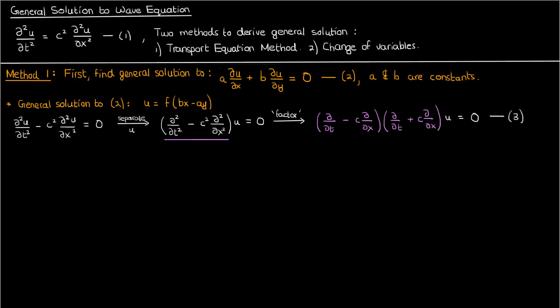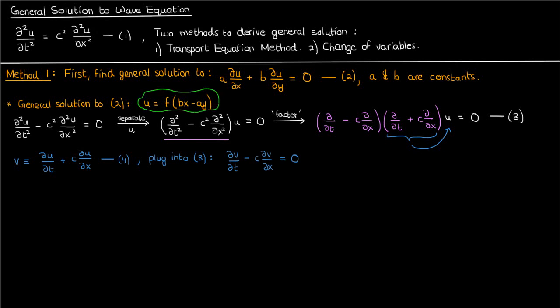You might not believe this factorization, but it actually works — you can expand out the expression to end up with the wave equation again. Now let's define a function v by expanding out the first operator factor on u: v equals the partial of u with respect to t plus c times the partial of u with respect to x. Plugging this v into equation 3, we get: the partial of v with respect to t minus c times the partial of v with respect to x equals 0. We already know the general solution to this first order PDE from equation 2.